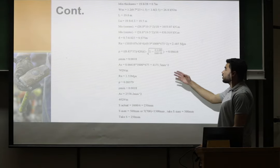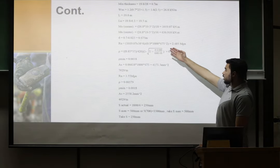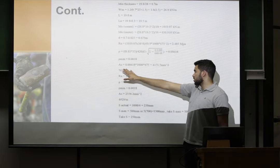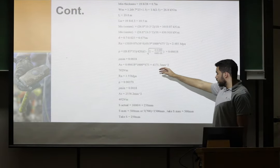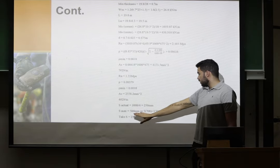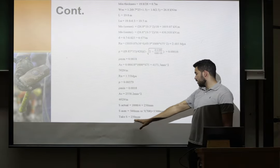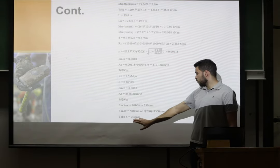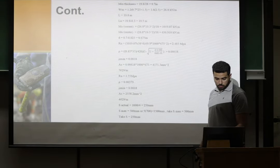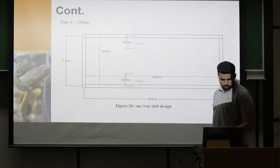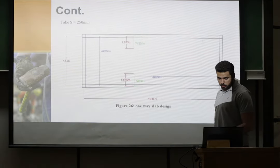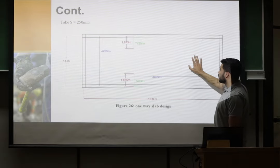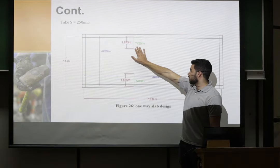Then we calculate the L and LN. Then we find the rho and rho minimum. Then we find the area of steel. After that we take the S-Max. Then we find the S-Max that it's 500, so we will take 250 mm. Here a cross-section for one-way slab design, as we showing here the reinforced concrete.